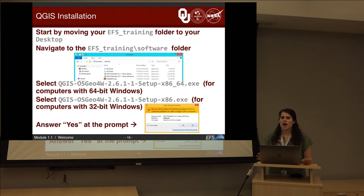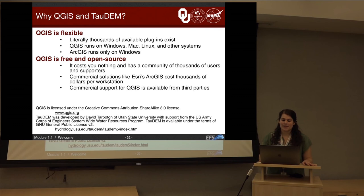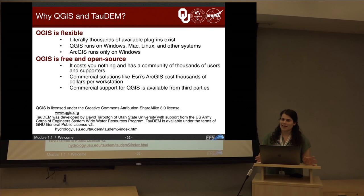Now we're moving on to the QGIS installation process. You can find this video in the welcome video of the original EF5 training. We use QGIS and TauDEM for several reasons: QGIS has lots of plug-ins and runs on Windows, Mac, Linux, and other systems, while ArcGIS runs only on Windows. A big reason we use QGIS is that it's free and open source — it costs nothing and has a community of thousands of users and supporters, so if you ever have a question, you can Google a problem and there's probably an answer. Commercial solutions like Esri's ArcGIS cost thousands of dollars per workstation, while commercial support for QGIS is available from third parties.